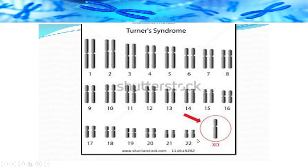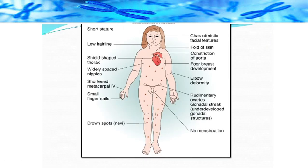This is a case of Turner syndrome. The affected individual is female. Not only are the ovaries rudimentary and the uterus small, but there is also no menstruation. Physical features include a shield-shaped thorax and poor breast development — secondary sexual characteristics are underdeveloped in this female.